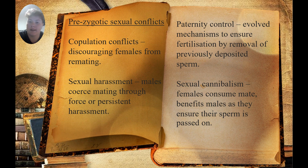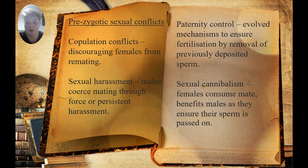Paternity control, as seen in dragonflies, is where males evolve mechanisms to remove previously deposited sperm. Then there's sexual cannibalism, seen in black widows, where females consume their mate after copulation, allowing full sperm transfer and reducing the chance of females recopulating.